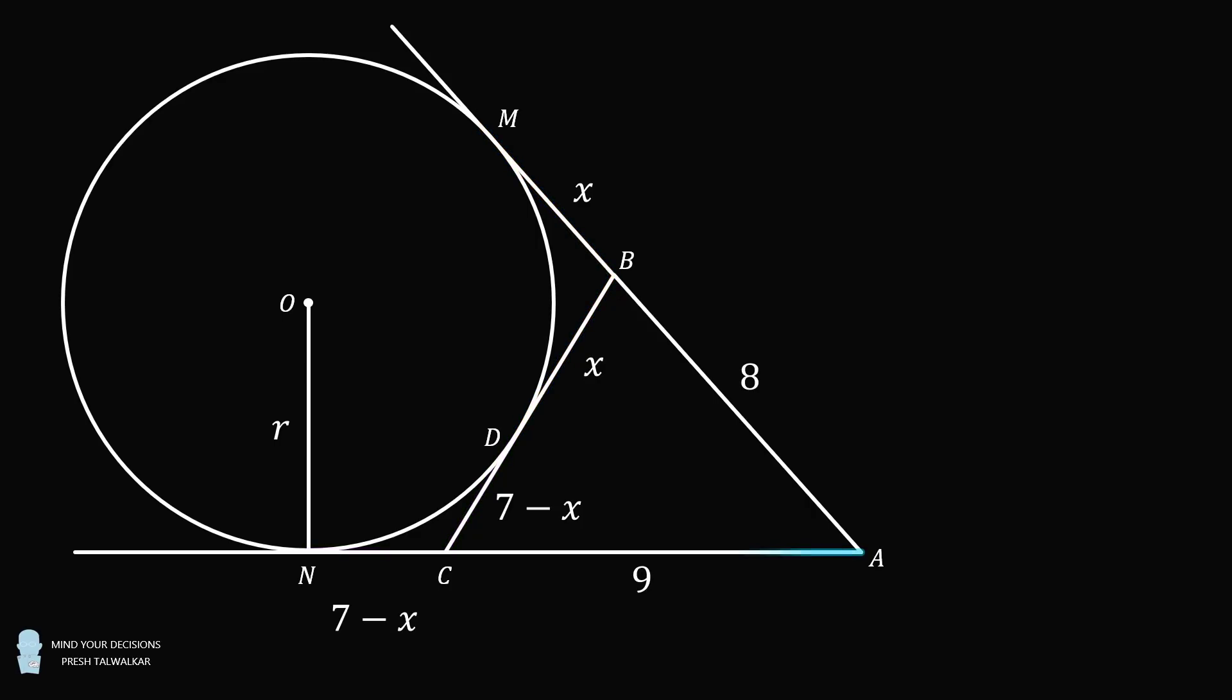From here, AN is an external tangent that will be congruent to AM. So, we have 8 plus X is equal to 16 minus X. This means 2X is equal to 8, so that X is equal to 4.